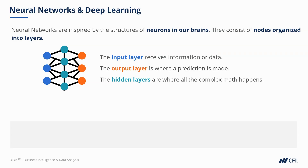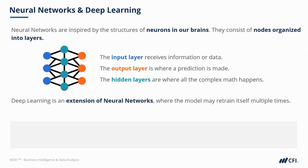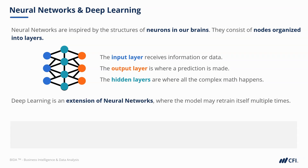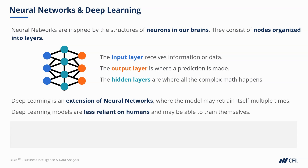Don't worry about understanding how this works for now. Neural networks are a challenging concept to understand, and for that reason they're often referred to as a black box type model. The concept of deep learning is conceptually an extension of a neural network. A deep learning model is typically less reliant on humans to help it through the training process and may be able to train itself.